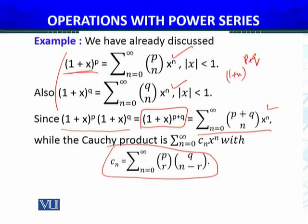c_n will be summation r equals 0 to n of (p choose r) times (q choose (n-r)). These are combinations. Here you should have r instead of n, r equals 0 to n.